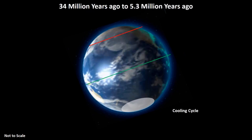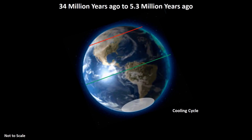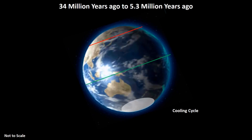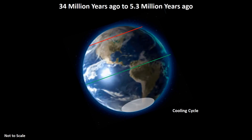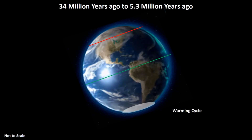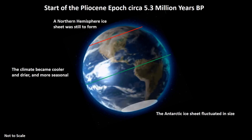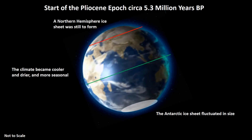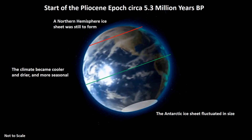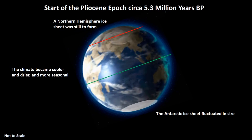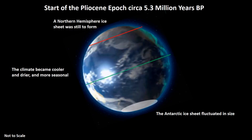The trend continued through the end of the Eocene at around 34 million years ago. At this juncture, cycles of colder and warmer periods can be detected, so that the Antarctic ice sheet expanded during cooler periods and contracted during warmer cycles. The cycles continued up to the start of the Pliocene Epoch, at which point the climate had become cooler, drier, and more seasonal. But the northern hemisphere ice sheet was still to form for any length of time, while the Antarctic ice sheet continued to fluctuate in size.